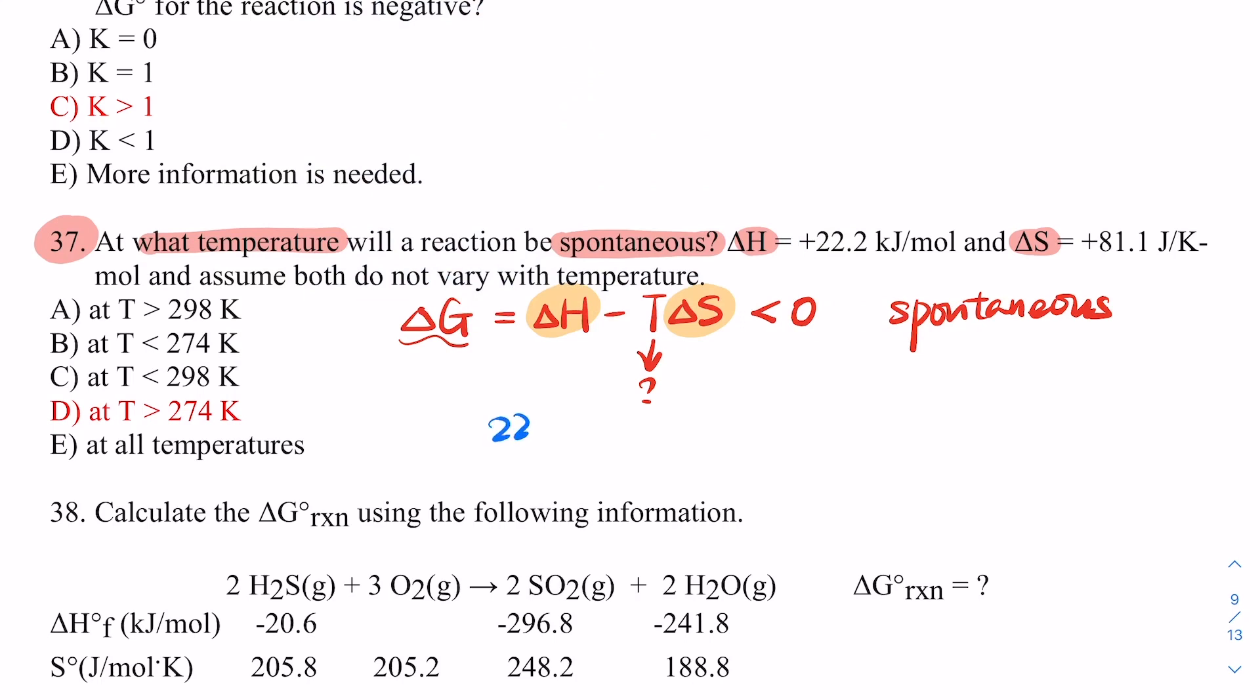Delta H is 22.2 kilojoules minus T. We're looking for T. Delta S is 81.1 joules per K mole. I need to reorganize the equation. So that would be negative T times 81.1 joules per K mole, smaller than negative 22.2 kilojoules per mole.